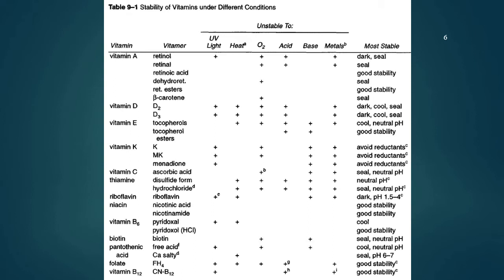Vitamin E is sensitive to heat, oxygen, acid, base, and also metal. To store vitamin E, it should be stored in cool, neutral pH packaging with good stability. For vitamin E, you do not have to store it in a dark bottle because it is not sensitive to light.